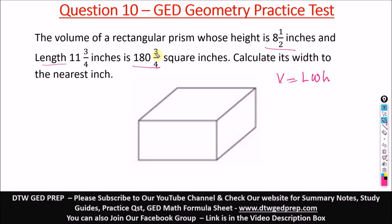Let's convert the fractions to decimals. The ¾ becomes 0.75, so this would be 180.75 for the volume. The length is 11.75, and our ½ here for height is 8.50. So our volume V is 180.75.